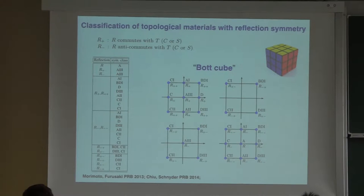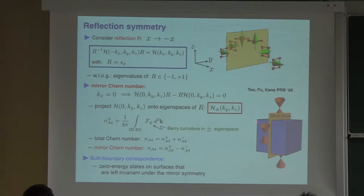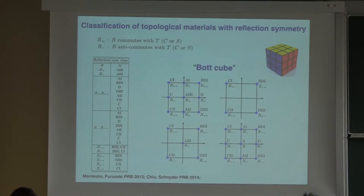We want to classify band structures in terms of reflection symmetry combined with non-spatial symmetries like time-reversal and particle-hole symmetry. To do that, you have to consider two cases: one where the reflection operator commutes with time-reversal or particle-hole symmetry, and one where it anticommutes. When it commutes, the two blocks of the Hamiltonian have the same symmetry class as the original. When it anticommutes, the two blocks have a different symmetry — there's a shift by two in the symmetry class, and therefore the classification changes. Considering all these possibilities, it turns out there are 27 cases to consider.